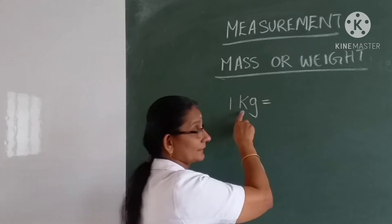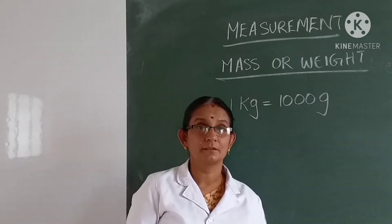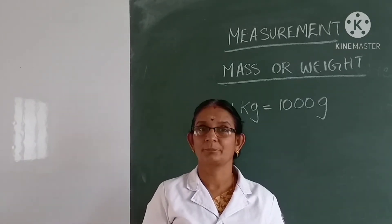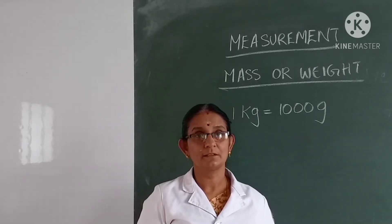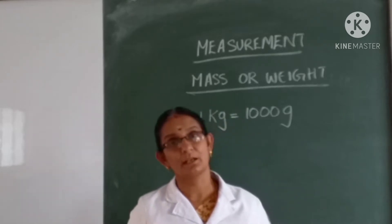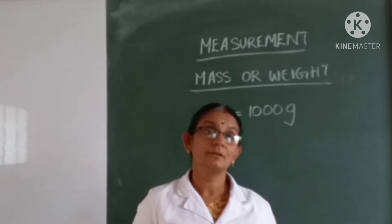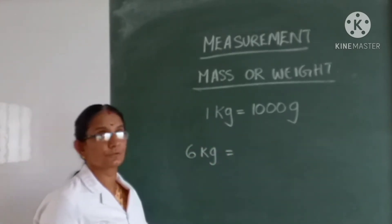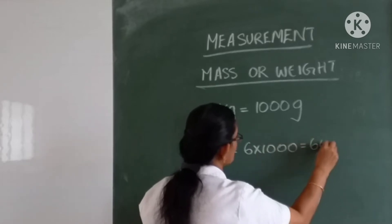Kilogram is expressed as kg and gram is expressed as g. Today we will learn how to convert kilogram into gram and gram into kilogram. The same method used to convert kilometer into meter is used here. To convert kilogram into gram, we multiply by one thousand. For example, 6 kilogram multiplied by one thousand equals 6000 grams.